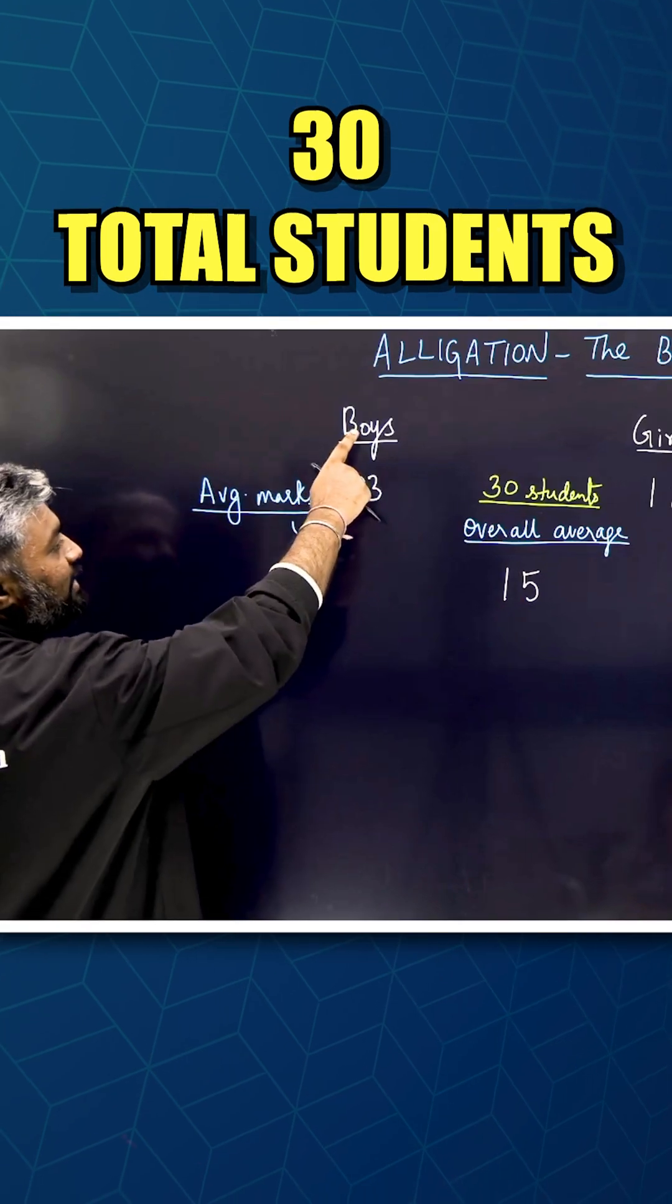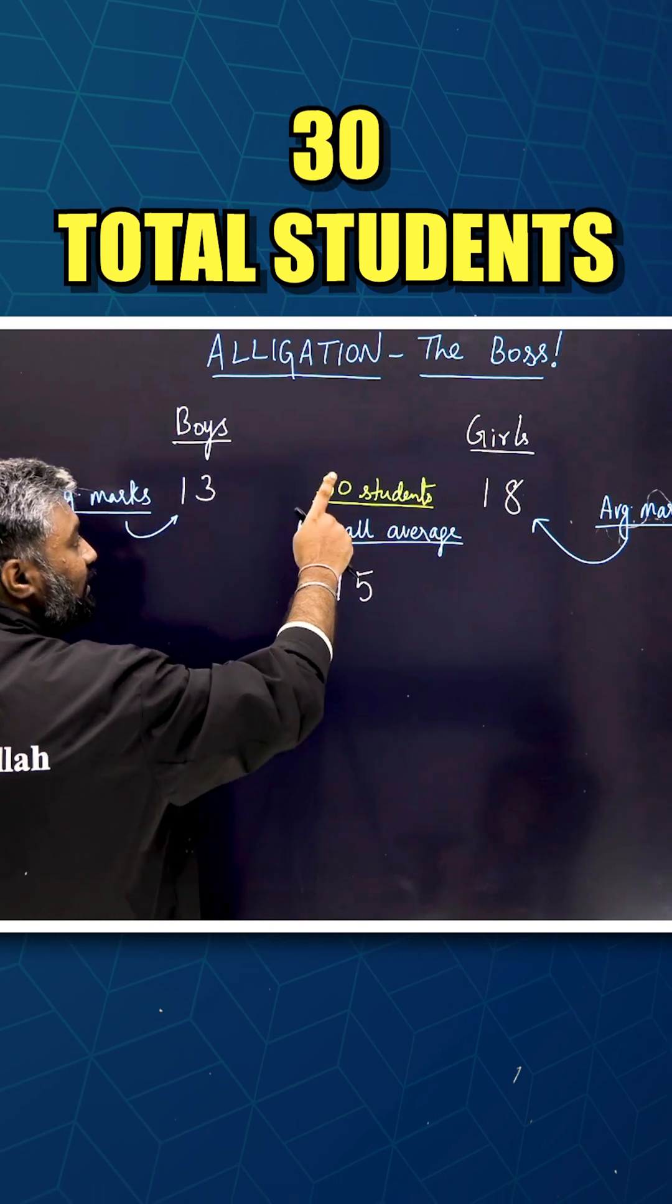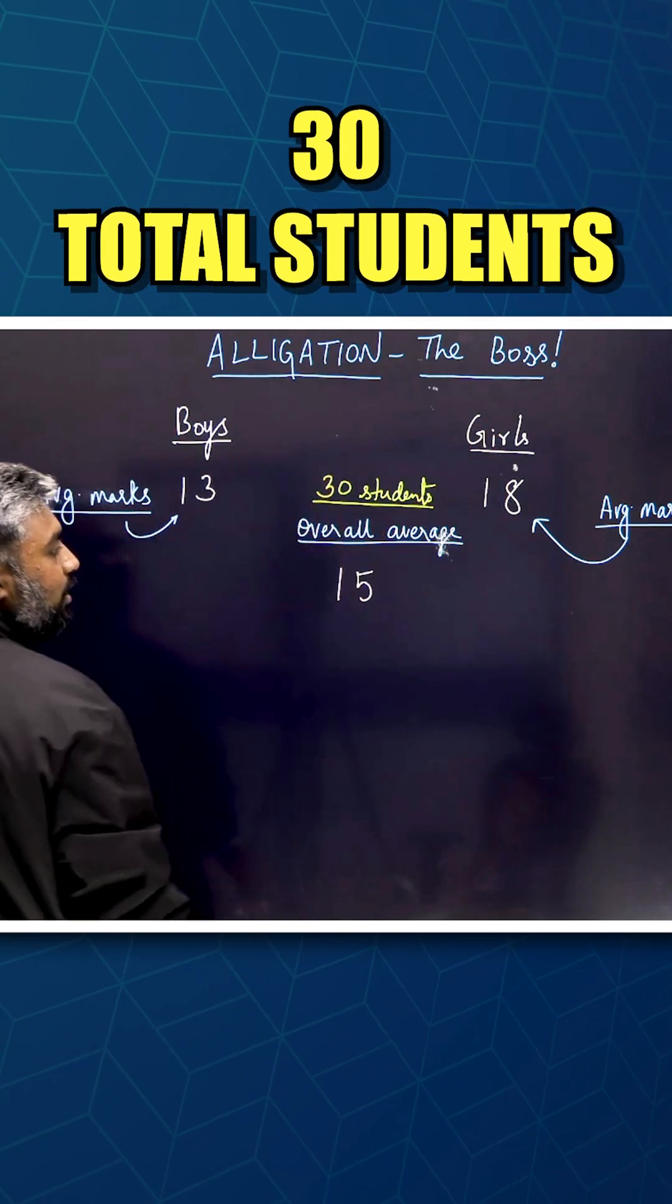13 is the average of all the boys marks, 18 is the average of all the girls marks, and of the 30 students, 15 is the overall average they're saying.